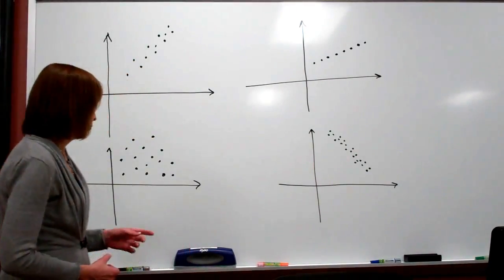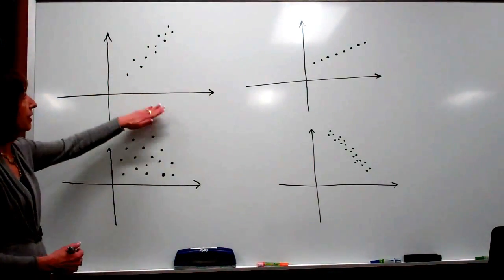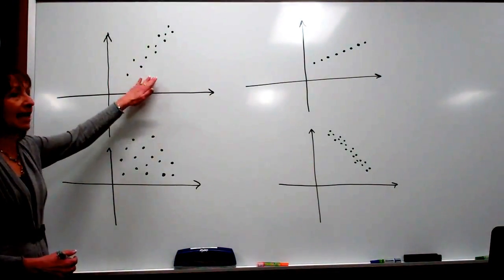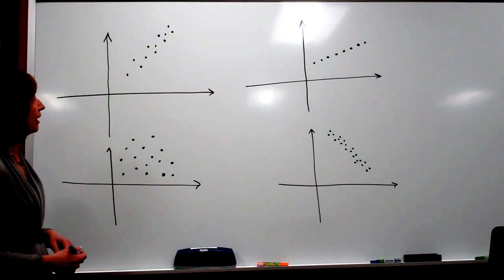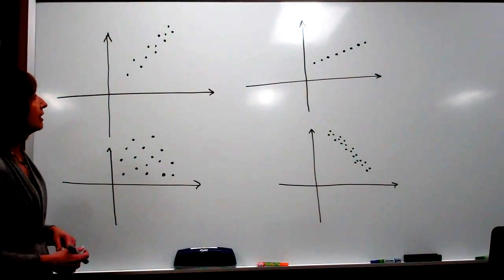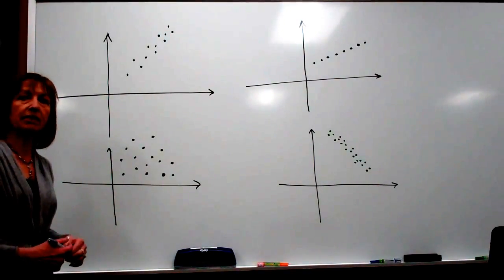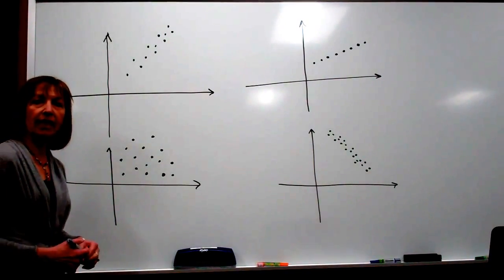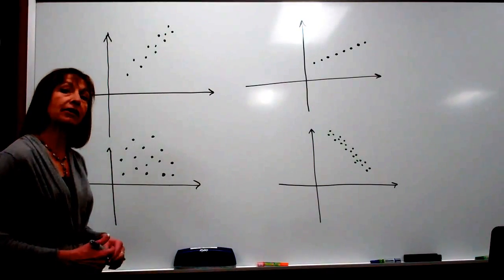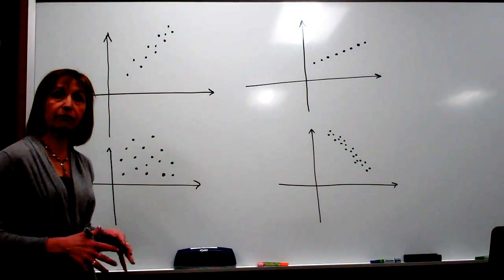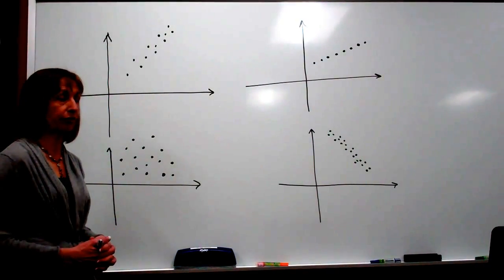I've drawn here four different scatter diagrams of different data sets that have been generated, just to look at what we see from the picture and how that relates to different values that we might get from this linear correlation coefficient.